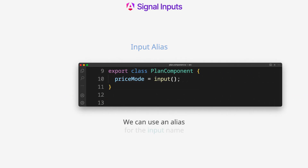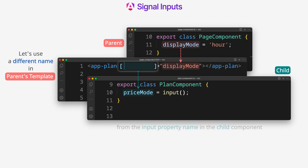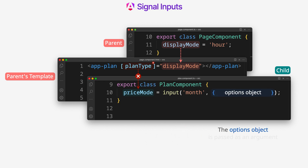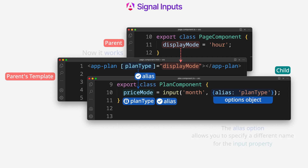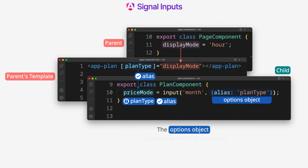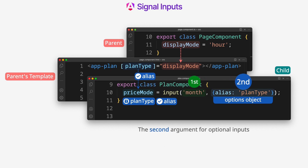We can use an alias for the input name in the parent template — a different name from the input property name in the child component. We need to add an option in the input function for this to work. The option object is passed as an argument. The alias option allows you to specify a different name for the input property. Inside the component class, we must use the property name, not the alias. The option object is passed as the first argument for required inputs, and as the second argument for optional inputs.